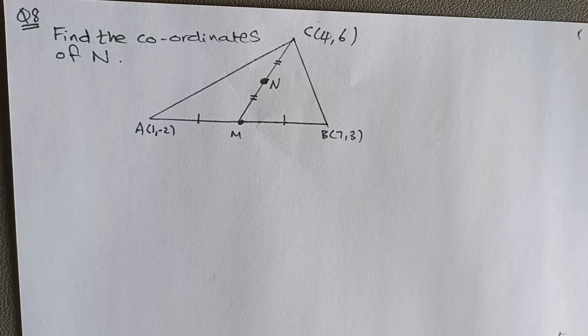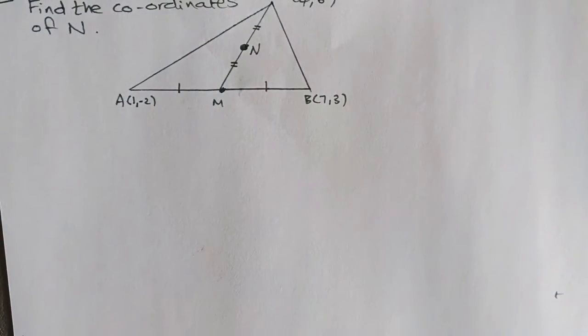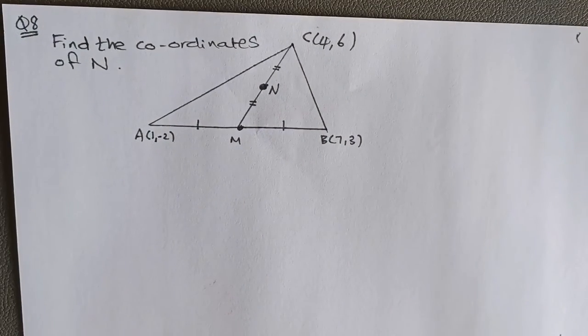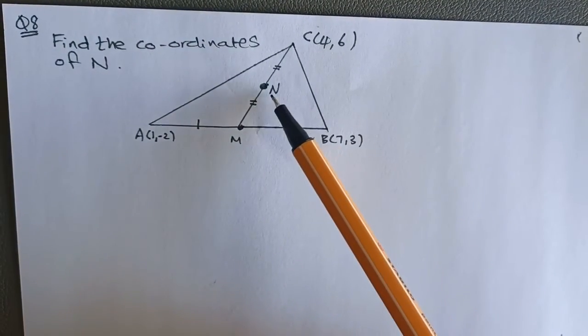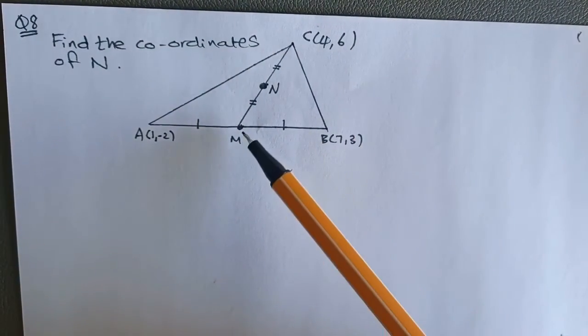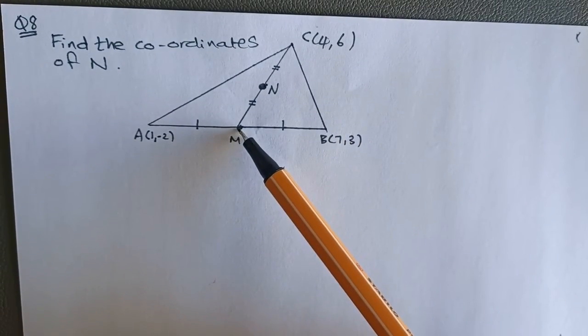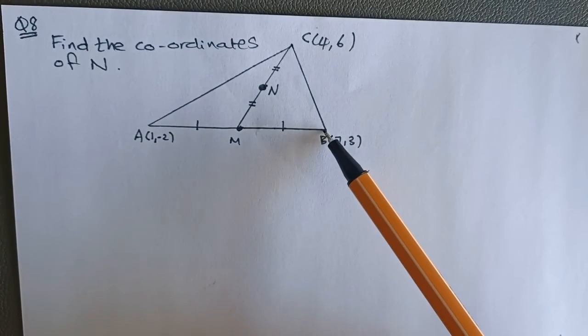Alright, suppose I want to find the coordinates of N. As you can see, N is placed over here and it is the midpoint of MC. M is also the midpoint of A and B.